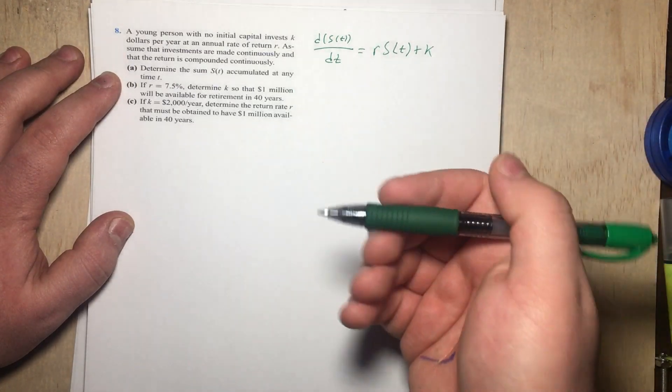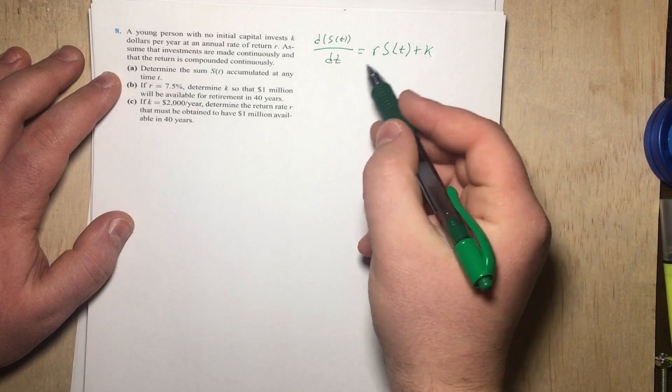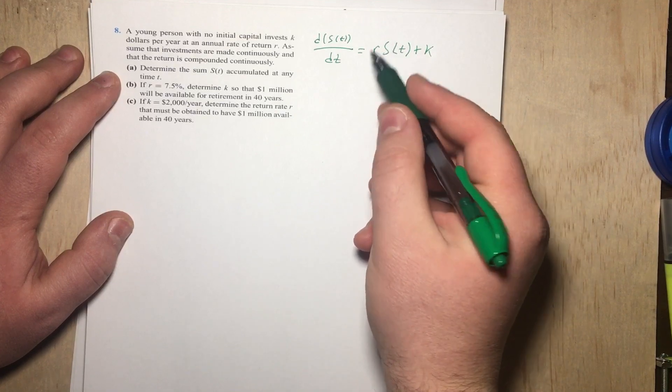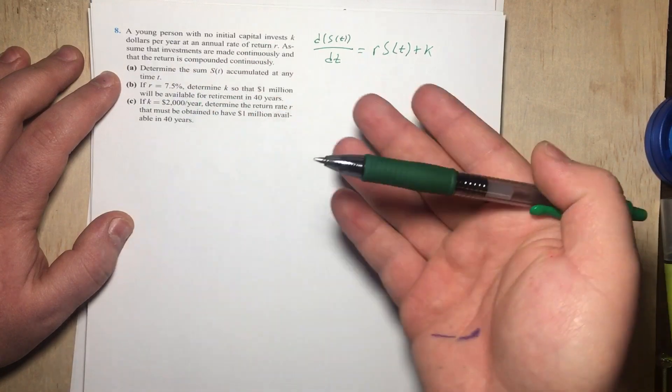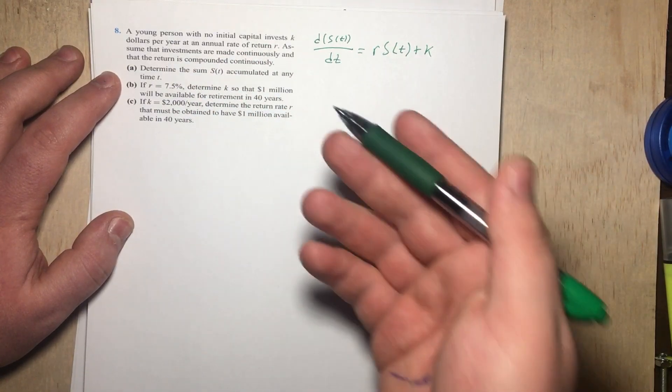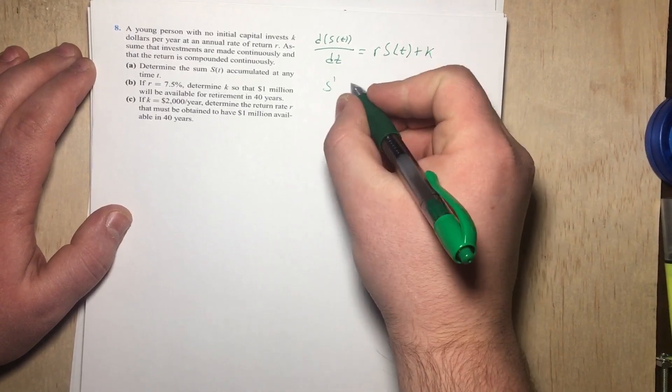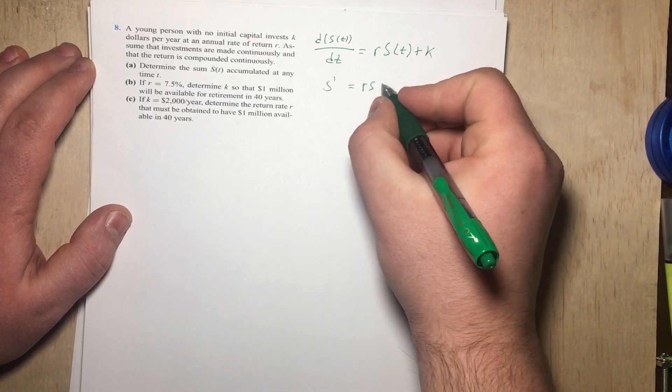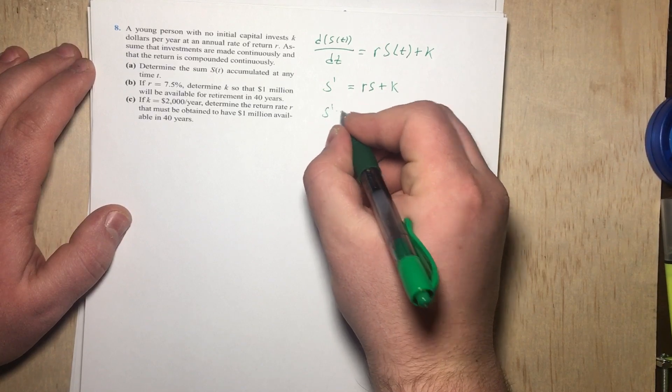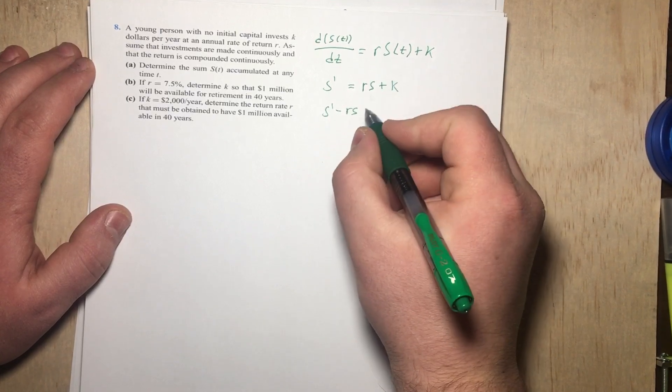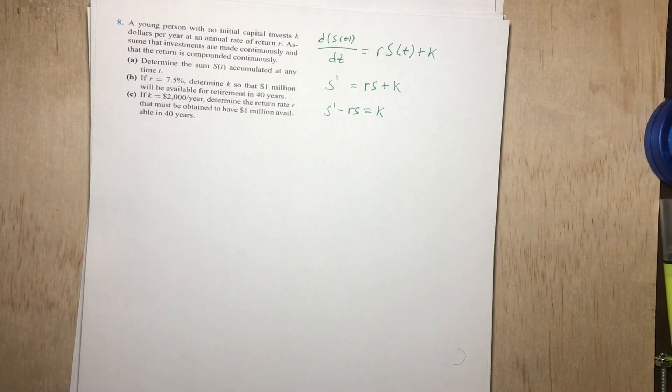We're putting in money annually, which is the K, but we're also being given money by the rate. So we have the rate of return R that is also going to add up to the account, which means that it's going to add up to the overall rate. So we have S' = RS + K, and then we can rearrange that to S' - RS = K. This is our differential equation.